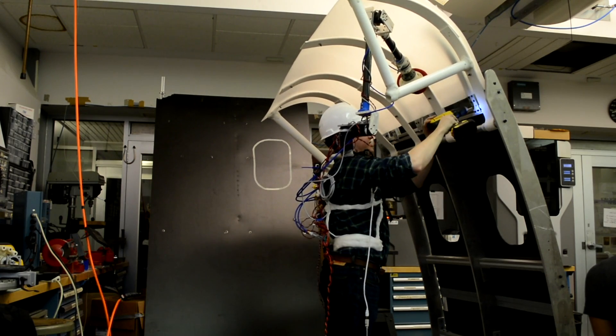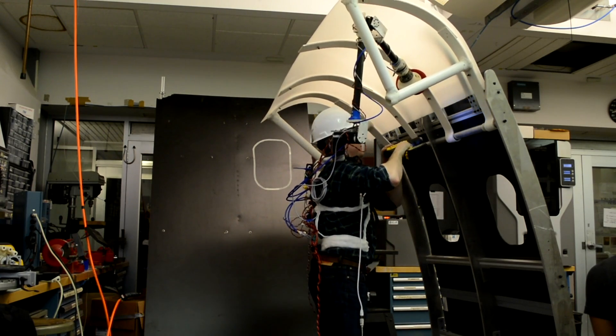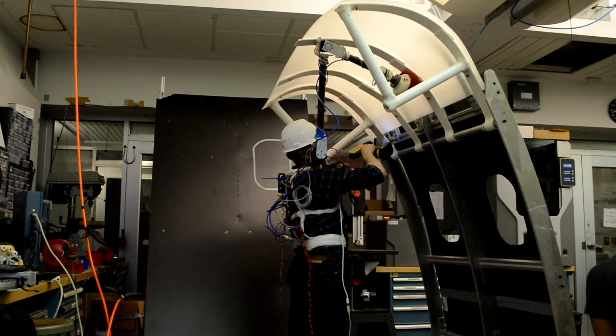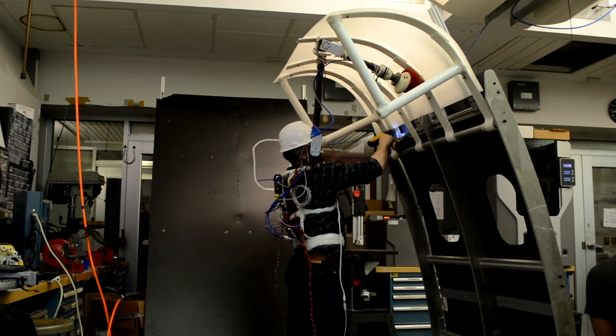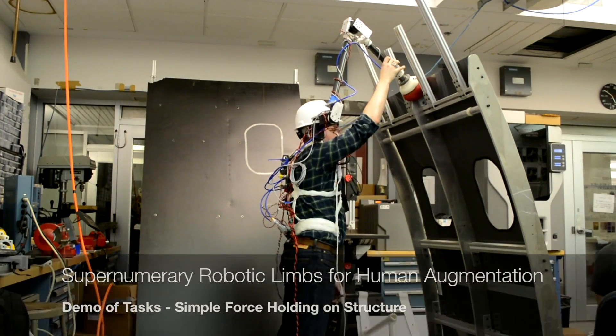This task usually requires two or more workers, but now the technician can assemble the work alone. Notice that the worker is free to move all around, but the robotic arm supports the compartment with force always in the correct direction and magnitude.